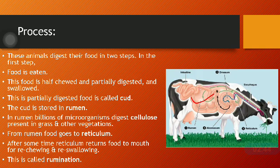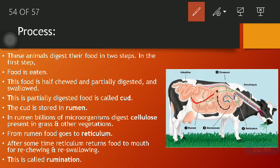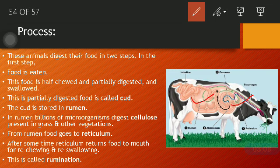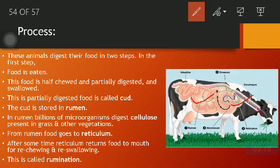From the rumen, food goes to the reticulum. After some time, the reticulum returns the food to the mouth for re-chewing and re-swallowing. This process is called rumination. So the food first goes to the rumen, then after digestion of cellulose it moves to the reticulum, and from the reticulum the food bolus goes back to the mouth of the ruminant.